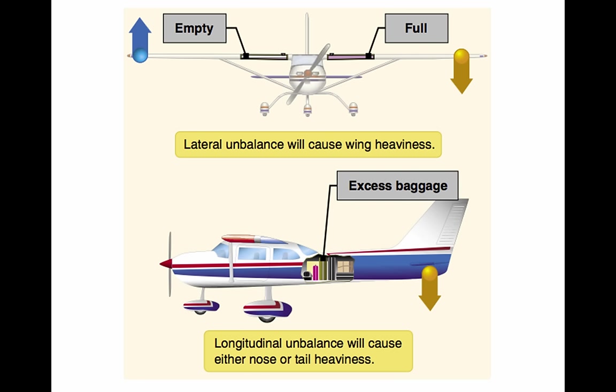Station: a location in the aircraft identified by a number designating its distance in inches from the datum. The datum is therefore identified as Station 0. An item located at Station +50 would have an arm of 50 inches. Useful load: the weight of the pilot, co-pilot, passengers, baggage, usable fuel, and drainable oil. It is the basic empty weight subtracted from the maximum allowable gross weight. This term applies to general aviation aircraft only.